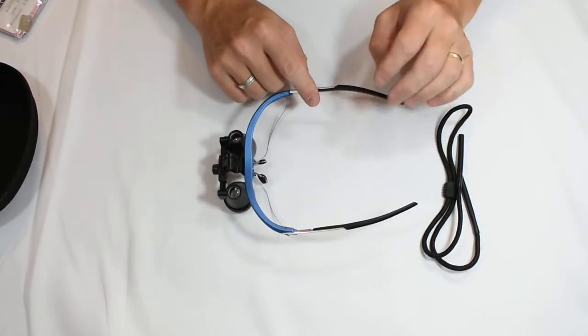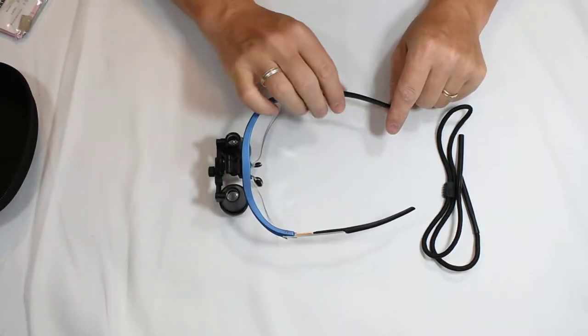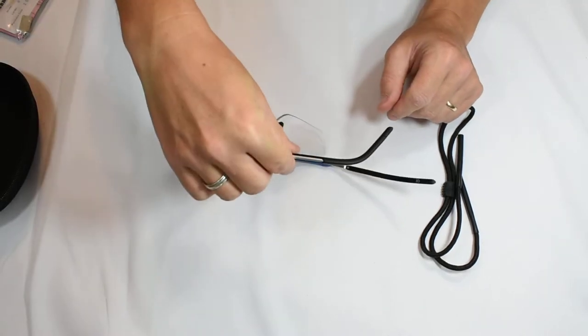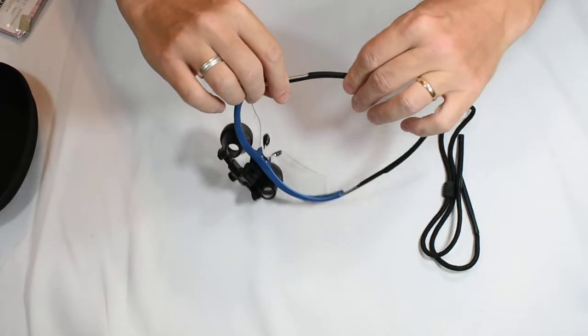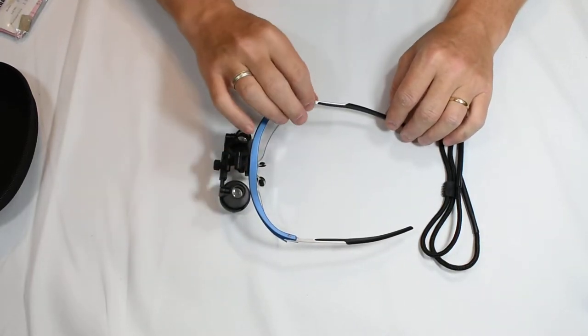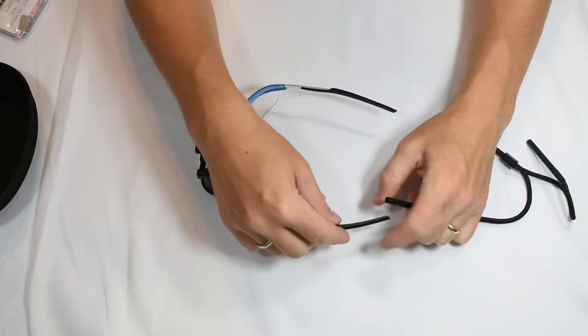So opening up these loops, the first feature that I want to show you is on the frame itself. These earpieces are bendable and can be adjusted to any angle. This is a very important feature when fitting them to your face. You'll want them to hold behind your ears.